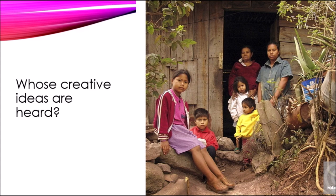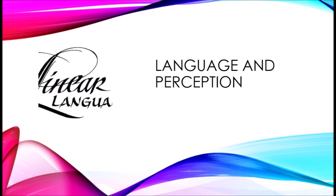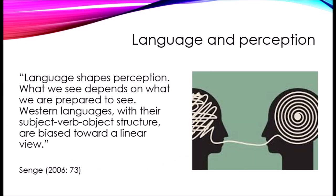Language is very important in evaluations because the language used influences our perception and therefore the quality of the evaluation. Sendh talks about how Western languages shape perception — in Western languages we have a subject-verb-object structure which may encourage a linear view. When a person presents a creative idea using their second or third language, there may be distortions in communication. With systems thinking, we're able to overcome this through feedback loops so that a variety of languages are included, including the first languages of both the evaluators and the idea generators.